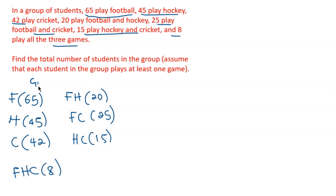These are the given values. The question asks us to find the total number of students in the group, assuming that each student plays at least one game. That means we are targeting students playing only football, only hockey, only cricket, as well as those playing any combination of the three sports — everyone who plays at least one game.